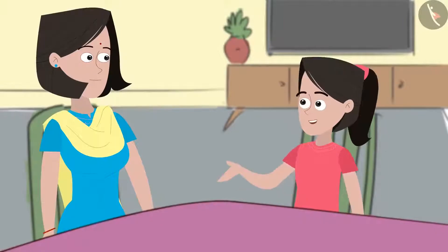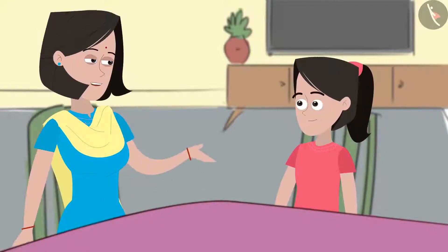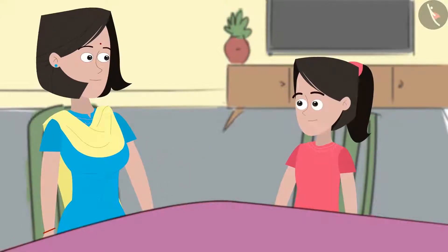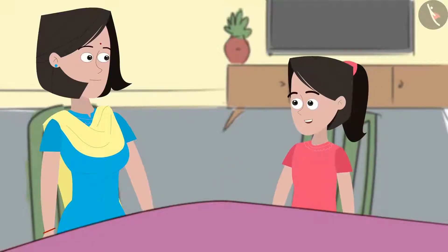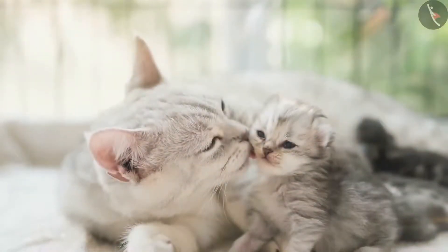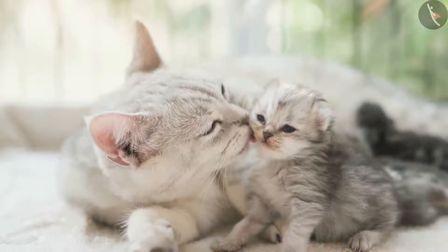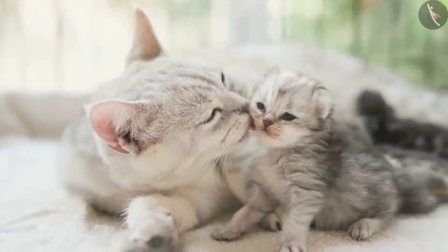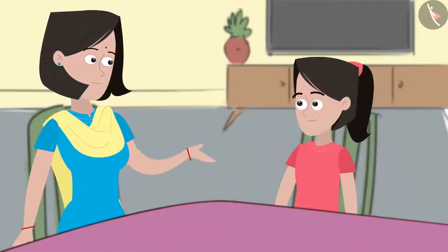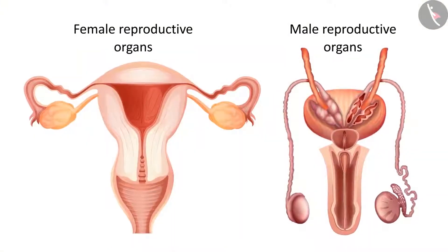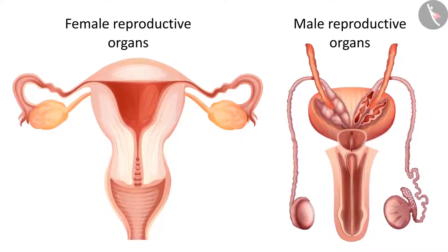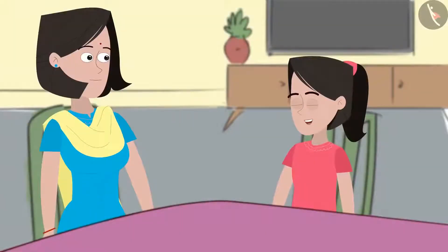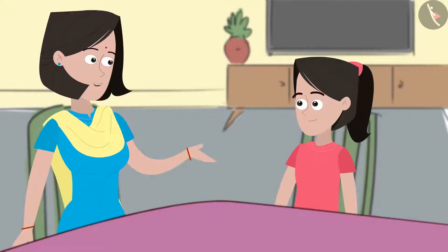Mummy, may I ask you something? Yes, sure, Sania. Remember, the other day we were discussing asexual reproduction in animals? Yes. I want to know how animals such as dogs and cats produce their young ones. Is that too done asexually? No, Sania. These animals reproduce through the sexual mode. Remember, I had told you that like plants, animals too have male and female reproductive organs? Yes, Mummy. These organs play a vital part in sexual reproduction.